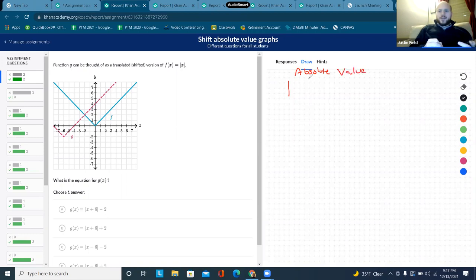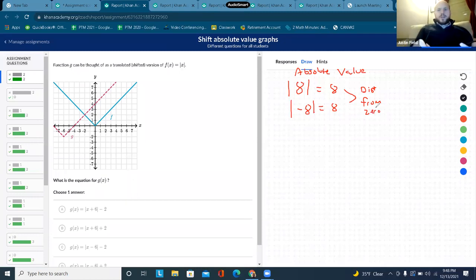Just as a review, we got like 8, right? The absolute value of 8 is 8. And the absolute value of negative 8 is 8. And why is that? Because they're both the distance from 0. They're both 8 units away from 0.